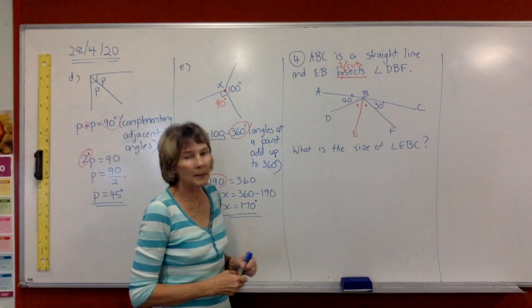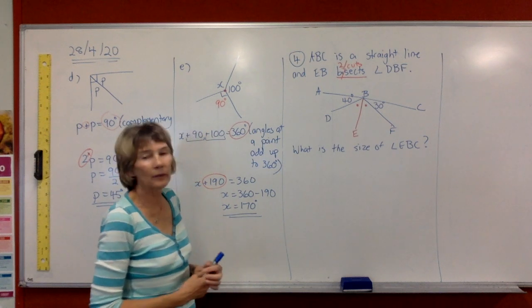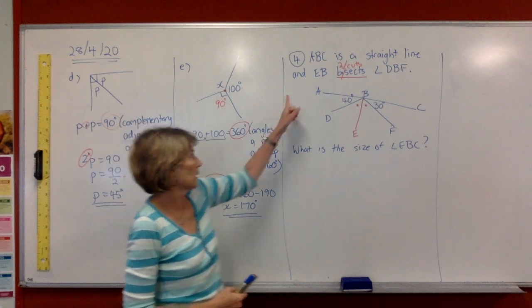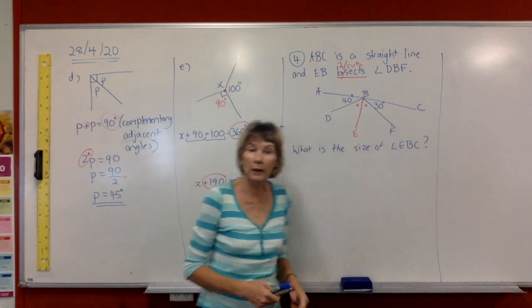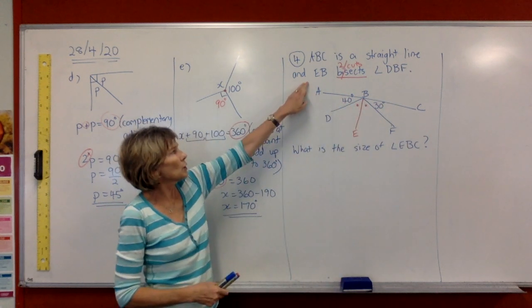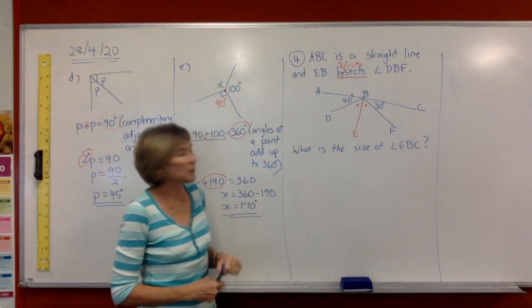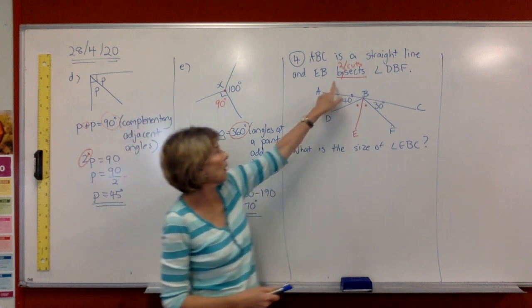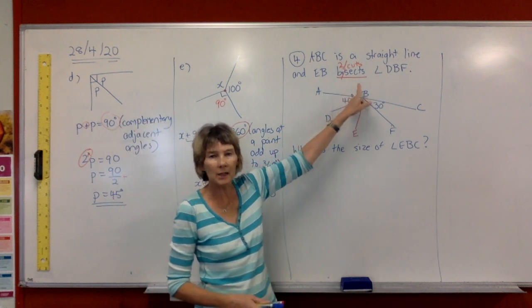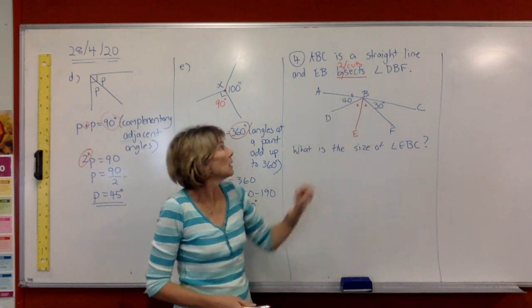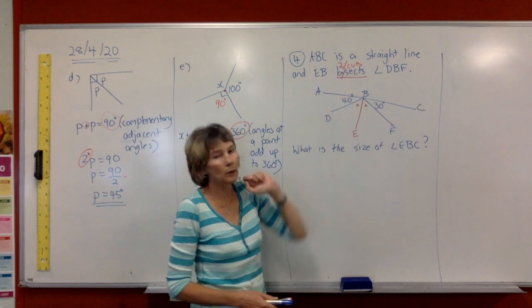So they've told you that ABC is a straight line and they've given you a diagram. ABC is a straight line. They've also told you that EB bisects angle DBF. So the word bisects means, bi means two, and sects means to cut. So we're cutting it into two equal parts.